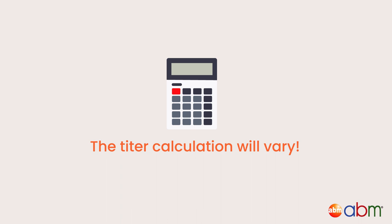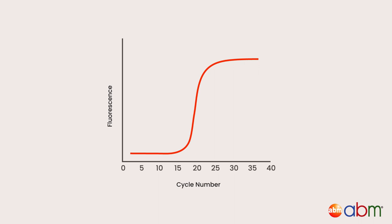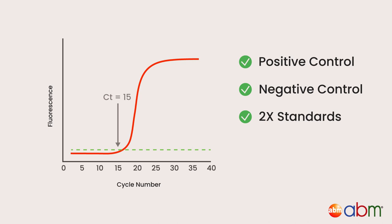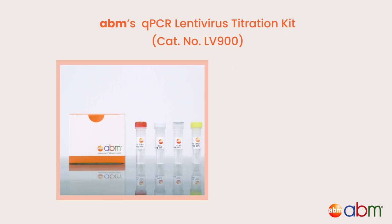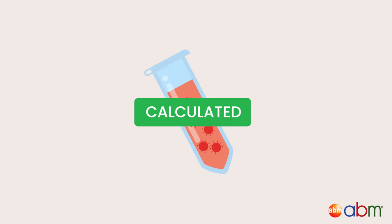How to calculate titer? Depending on which method you choose, the titer calculation will vary. In this video, we will focus on calculating physical titer using the qRT-PCR method. From your qRT-PCR measurements, you will collect cycle threshold values from your viral prep. It is a good idea to also collect CT values from positive and negative controls at the same time — we recommend using at least two standards. Using these CT values, calculate titer using the method provided by your kit's vendor. In ABM's kit, the CT values of the virus samples are calculated by a logarithmic regression generated by the kit's DNA standard. Now you have calculated the viral titer of your prep.